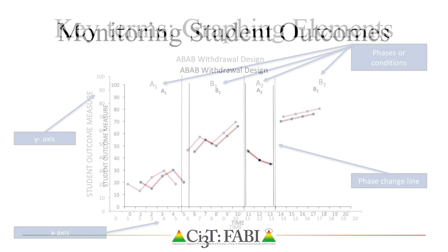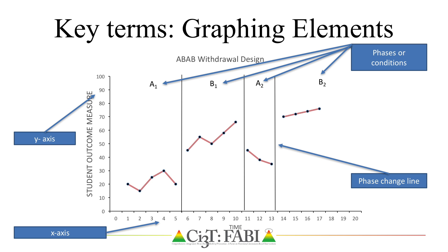Phases or conditions such as baseline or intervention are labeled and separated by phase change lines. Notice how data points are not connected by a line between phases, as you see in this example. In an ABAB or withdrawal design, the behavior of interest is measured with or without the intervention in place. A1 represents baseline where current practices are in place, B1 illustrates the introduction of the intervention, and A2 represents a withdrawal of the intervention, such as a return to those baseline practices.